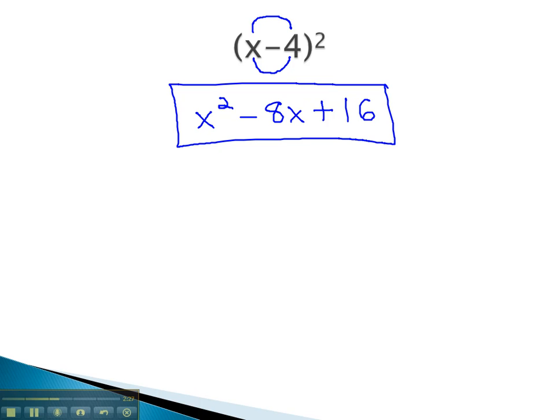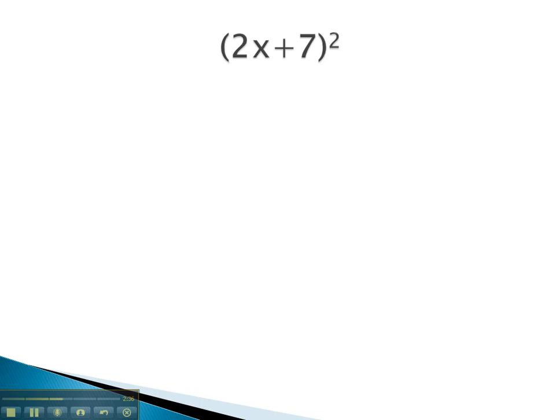Let's try another example that might be slightly more involved, where we see the binomial squared. Again, in this problem, we can follow the same pattern. Squaring the first term, 2x squared, 2 squared is 4, x squared, and then we look at the product.